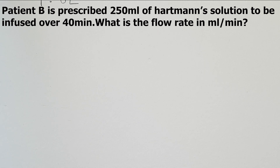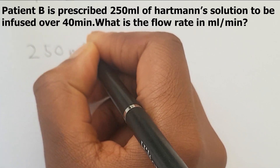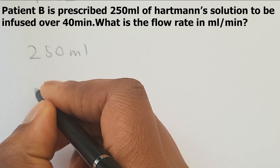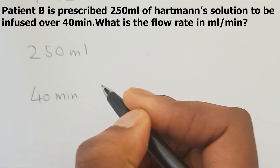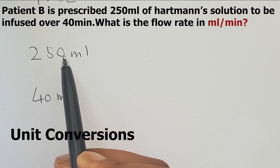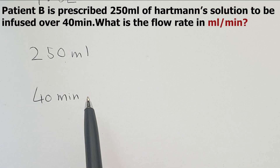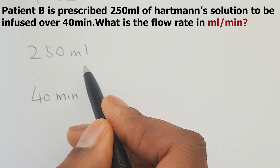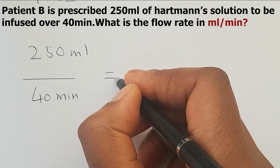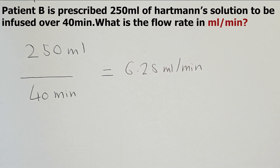The next question: Patient B is prescribed 250 mils of Hartmann's solution to be infused over 40 minutes. What is the flow rate in mils per minute? We have 250 mils over 40 minutes. The units are already in mils and the time is already in minutes, so we don't have to do any conversions. We simply divide 250 by 40, which gives us the answer of 6.25 mils per minute.